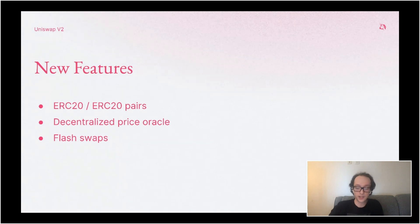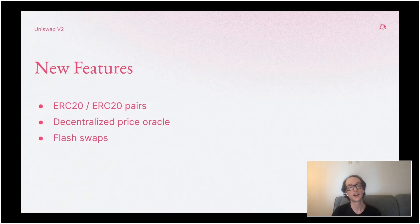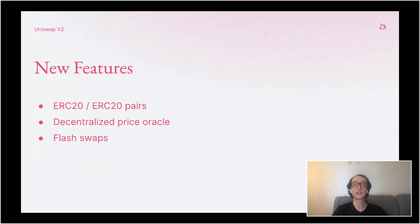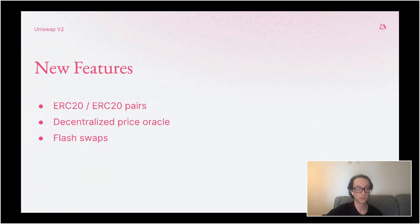The main idea for Uniswap V2 is to expand on the features of Uniswap V1 and provide new utility to the applications that build on top of it. The three primary new features are: ERC20/ERC20 pairs — right now all pairs on Uniswap are between ETH and a single ERC20 token, but in V2 you can put in any two ERC20 tokens and have a pair between them. The second is that a lot of applications rely on price oracles — it's kind of a meme at this point, but everything needs an oracle and it tends to be the weak point for a lot of applications, a point of centralization.